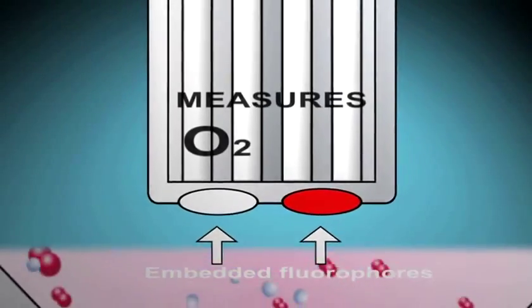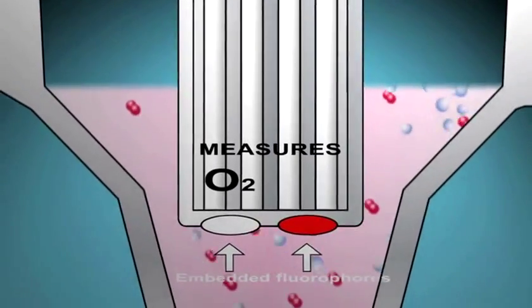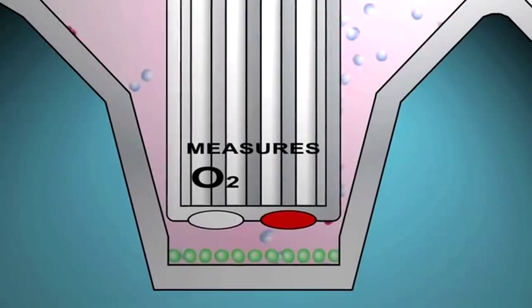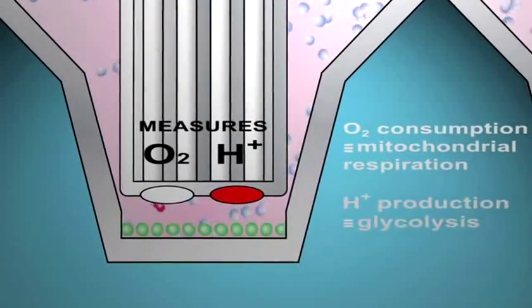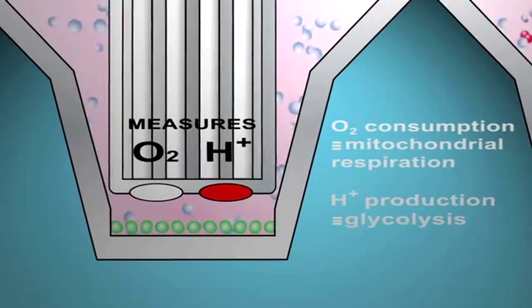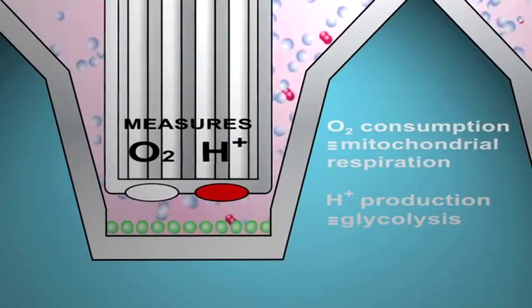The first fluorophore is quenched by oxygen and measures the mitochondrial component of metabolism. The second fluorophore is sensitive to protons and provides information on glycolysis. The embedding of the fluorophores in the polymer is our trade secret.